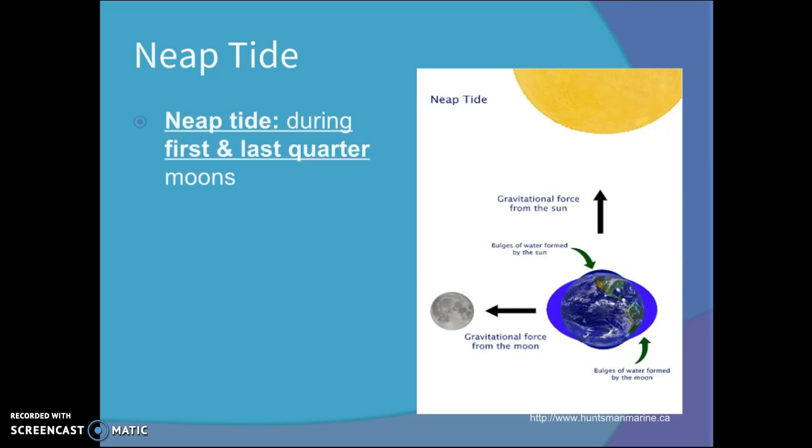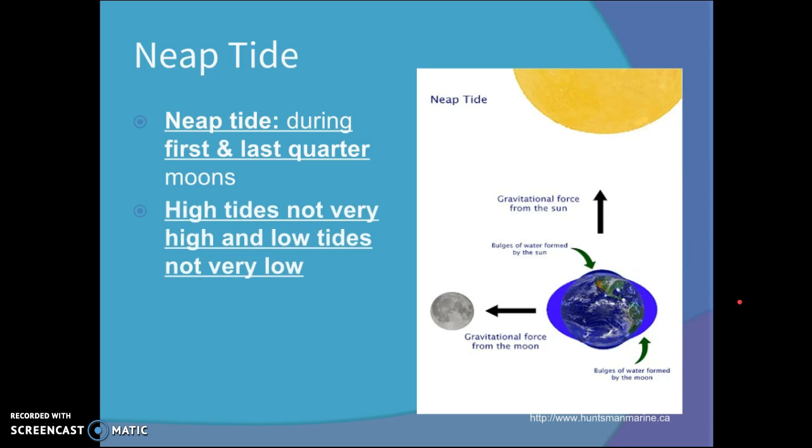Neap tides. They happen during the first and last quarter Moon. So when the Moon's over here, or when it's over here, high tides are not very high and low tides are not very low.